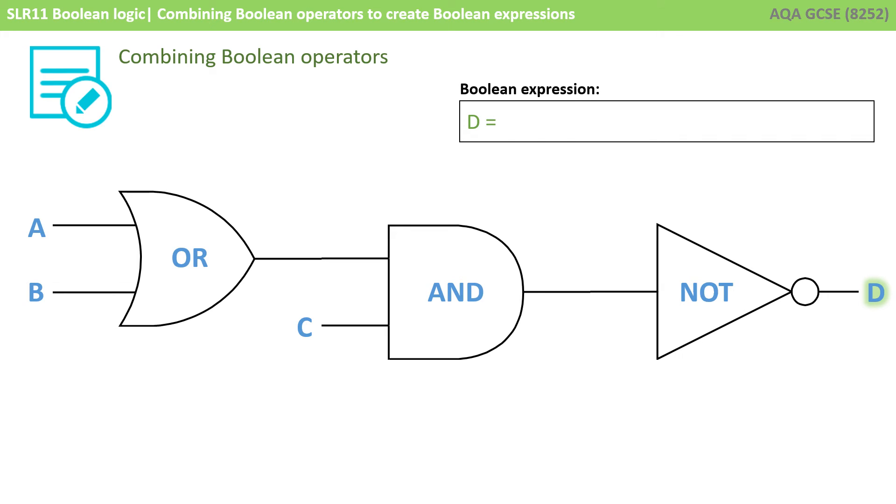Our Boolean expression is going to be D is equal to NOT C AND the output of A or B. Now you'll notice here there's actually more than one possible way of writing this Boolean expression. So it would have been perfectly fine to have said D equals NOT A or B AND C. Now at first this can seem a little confusing, like there must be one possible answer. Well, not really. You can think of a Boolean expression just like a maths expression. There's not one way of writing many maths expressions. For example, 3 plus 4 plus 5 is exactly the same as 5 plus 3 plus 4. They're both the same mathematical expression. We've just changed the order of some of the terms.